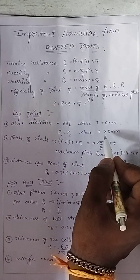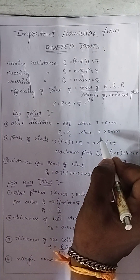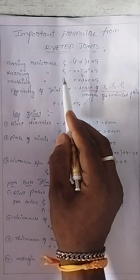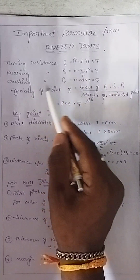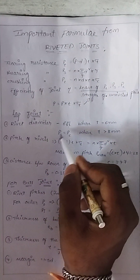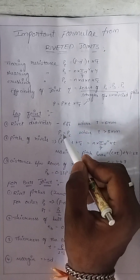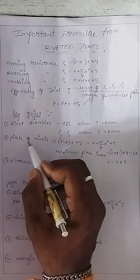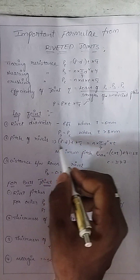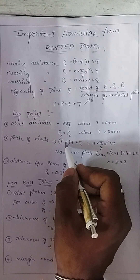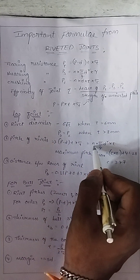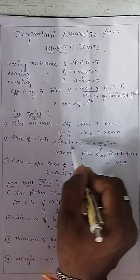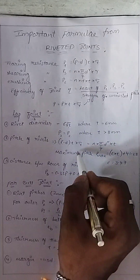When thickness of the plate is less than 8 mm, we use the relevant formula. PS means shearing resistance and PC means crushing resistance. PC of rivets formula is: (P minus D) into T into sigma T, equal to N into π by 4, D squared into tau. Maximum pitch P-max formula is C into T plus 41.28.